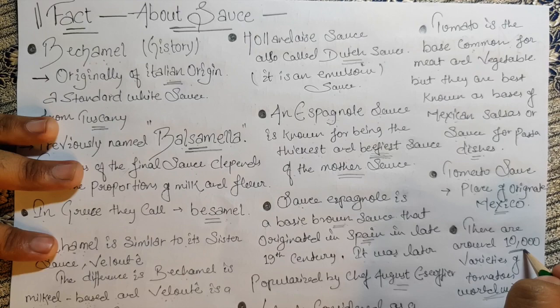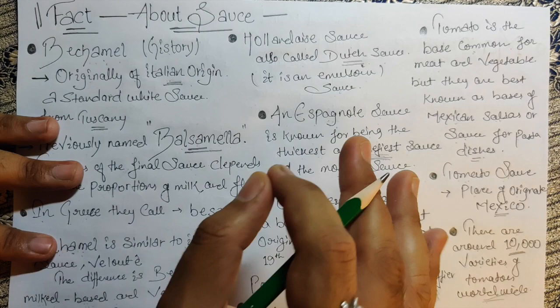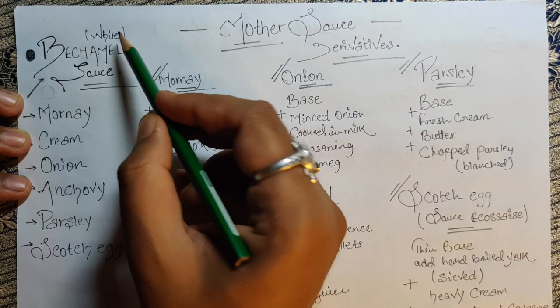For example, when it comes to Mexico they have more than 300 varieties of chilis alone. Worldwide there are 10,000 varieties of tomatoes — that's a lot! Now let's start the mother sauce derivatives. The first derivative sauces we'll cover come from béchamel, also known as white sauce.